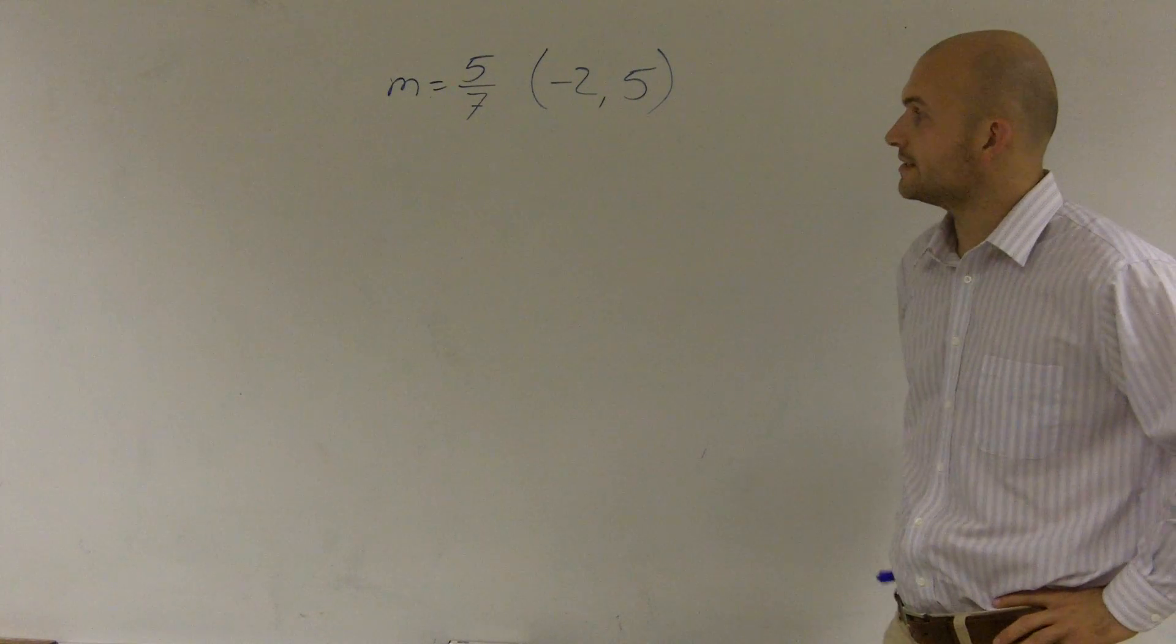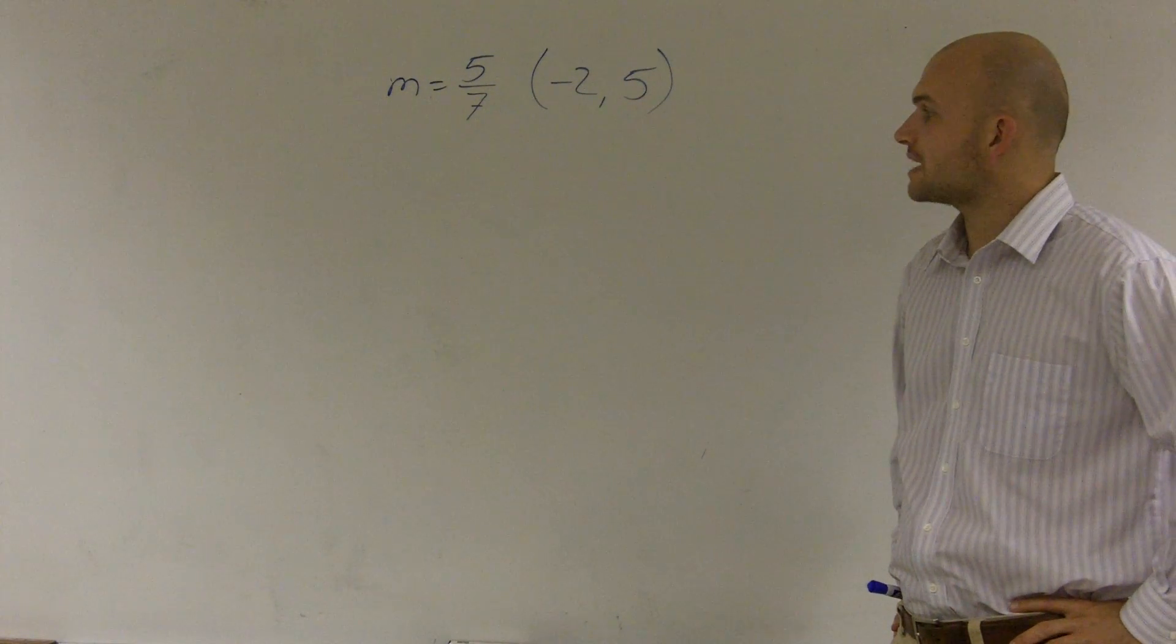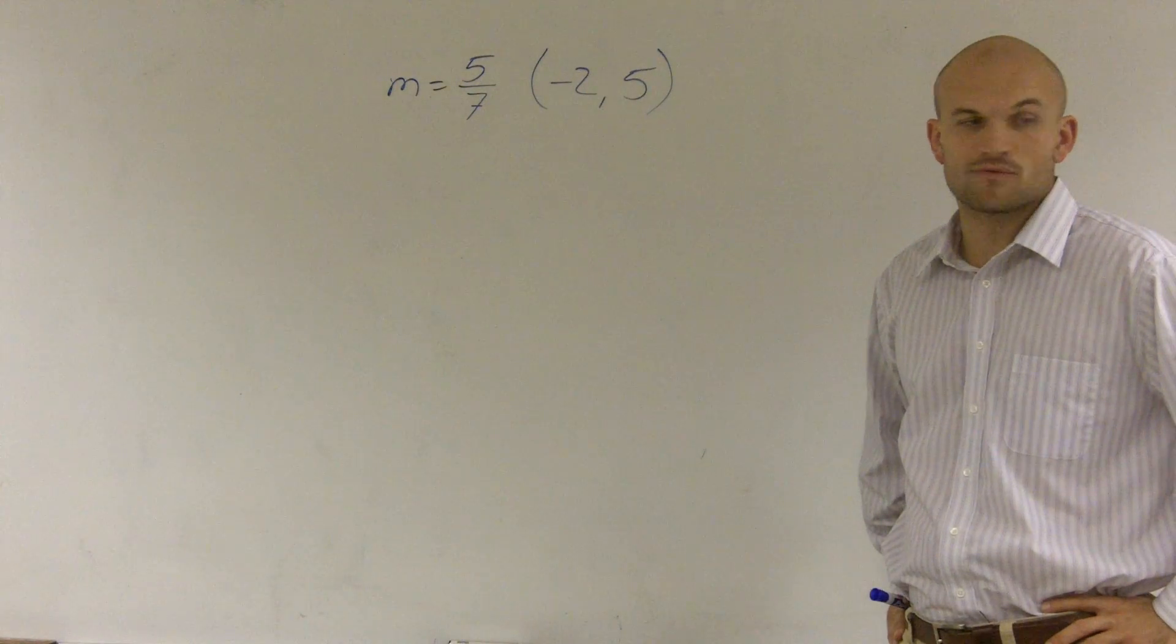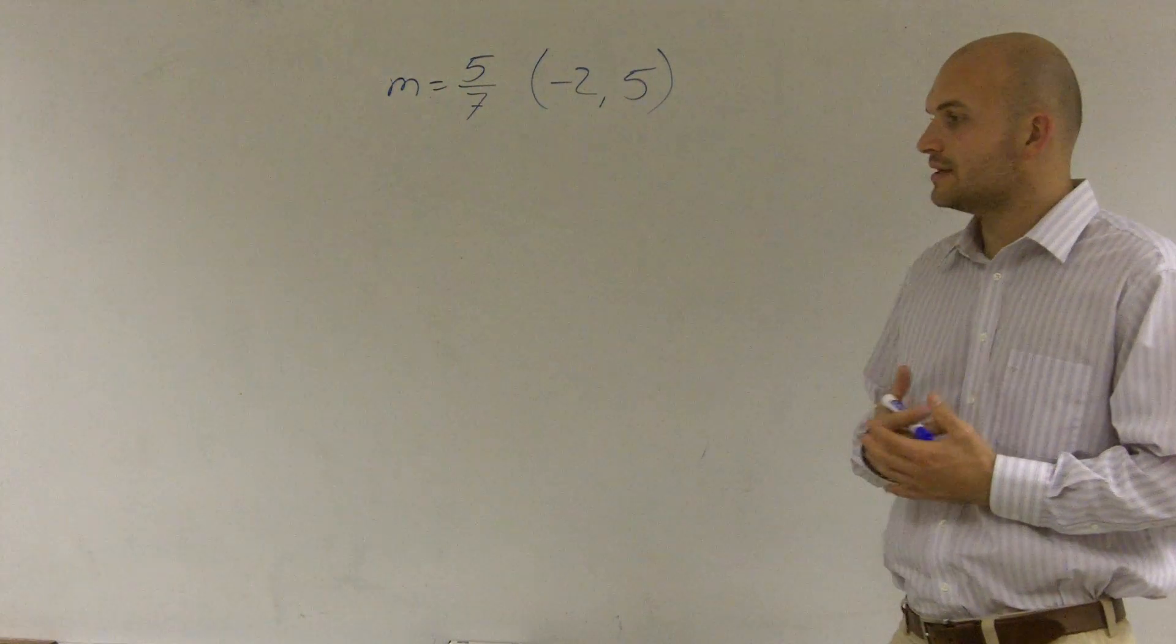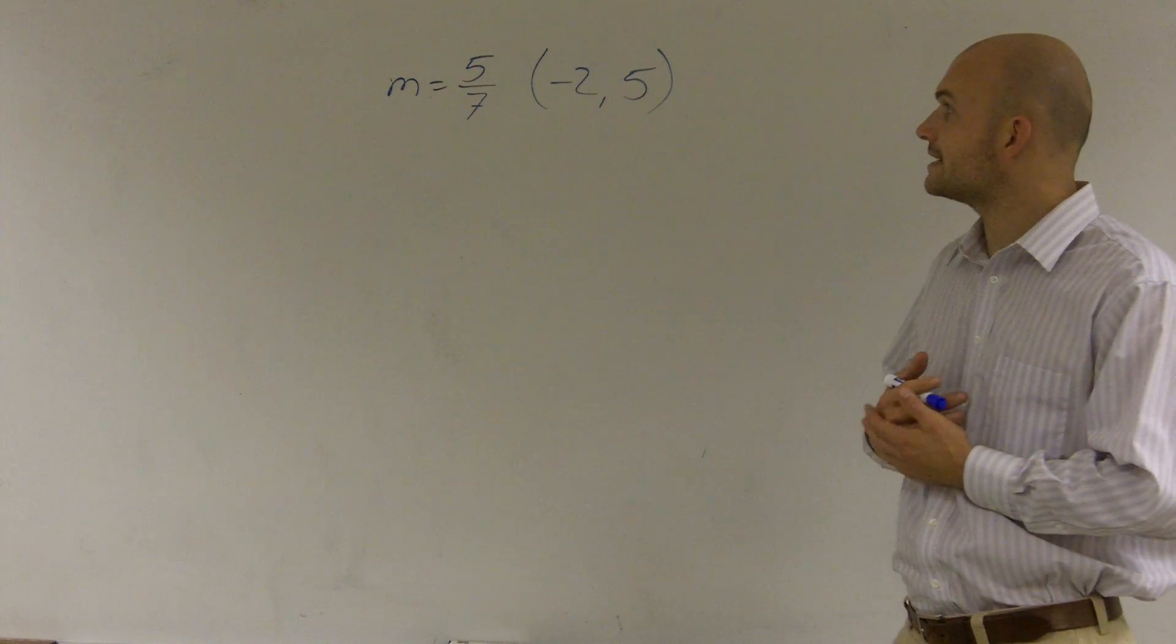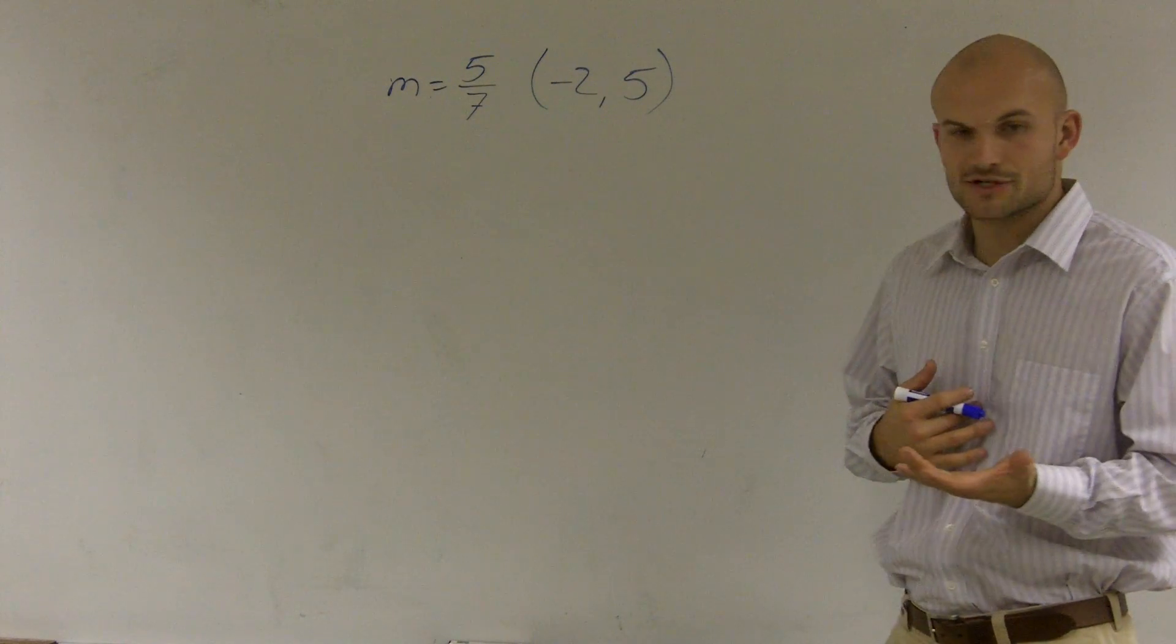So to find the equation of the line here, I'm going to use point-slope form. And what point-slope form is going to tell us is you're going to take your point and your slope to find your equation.